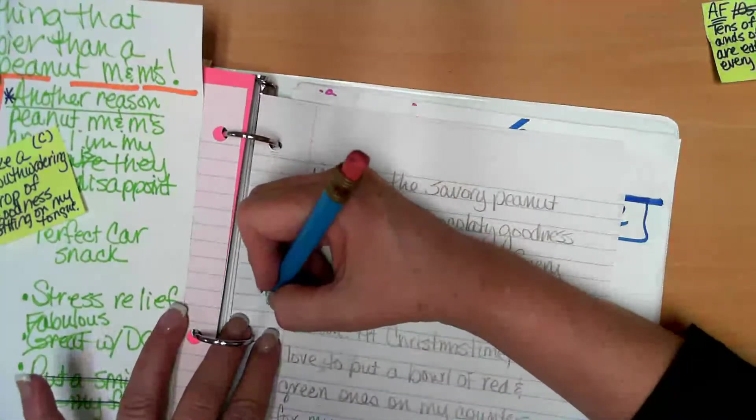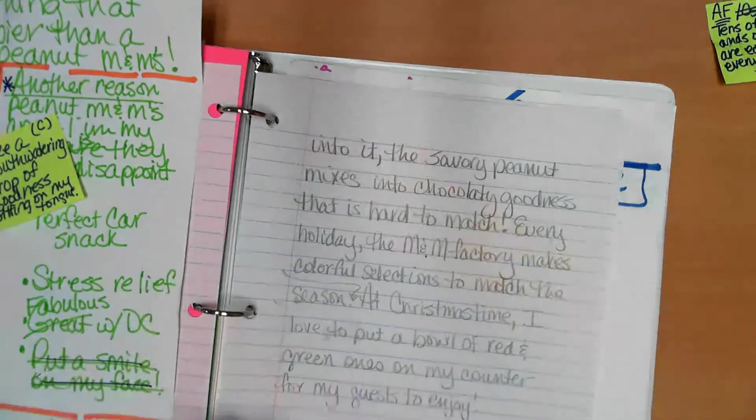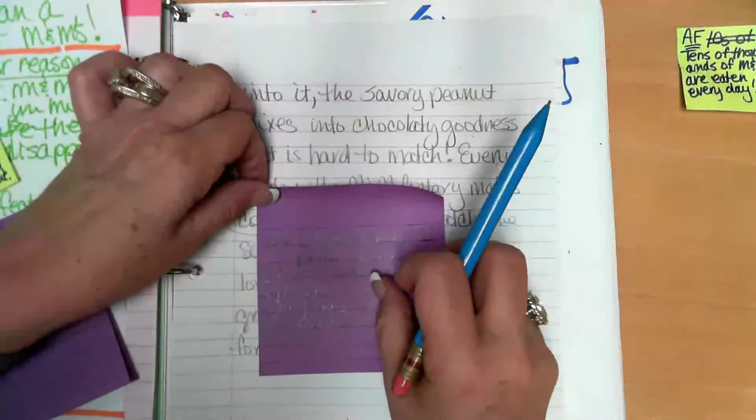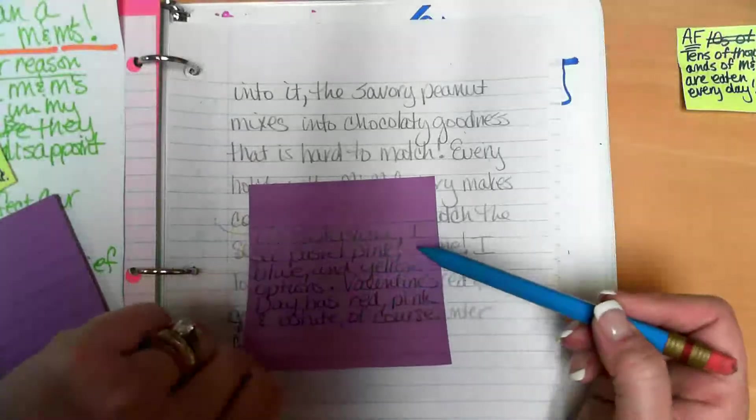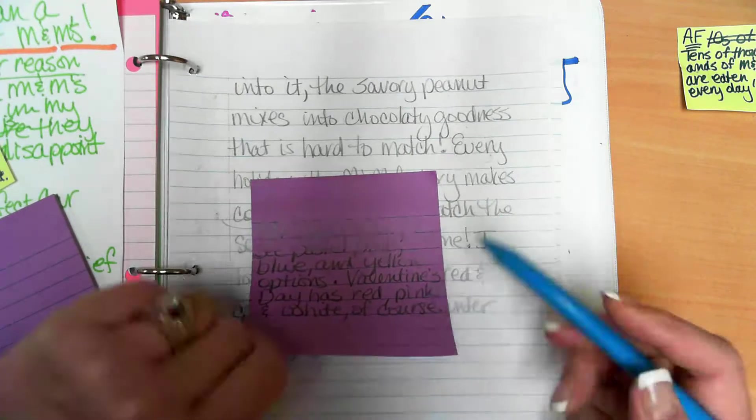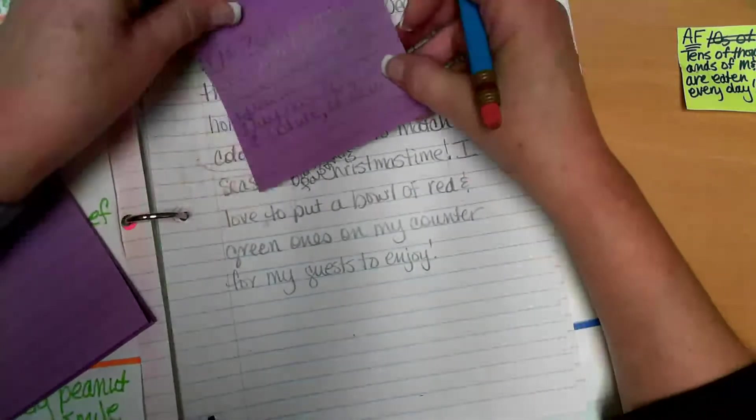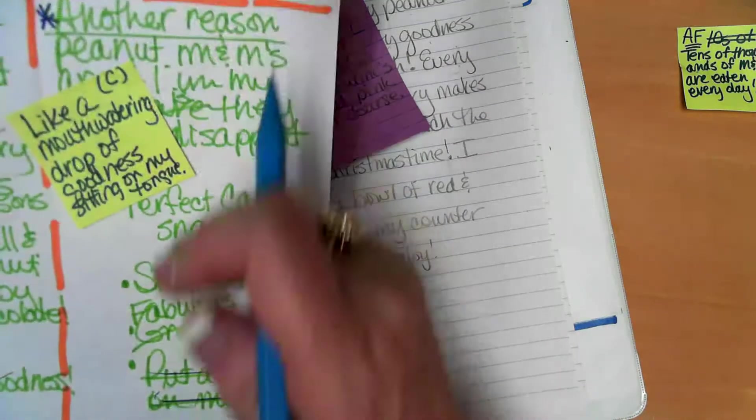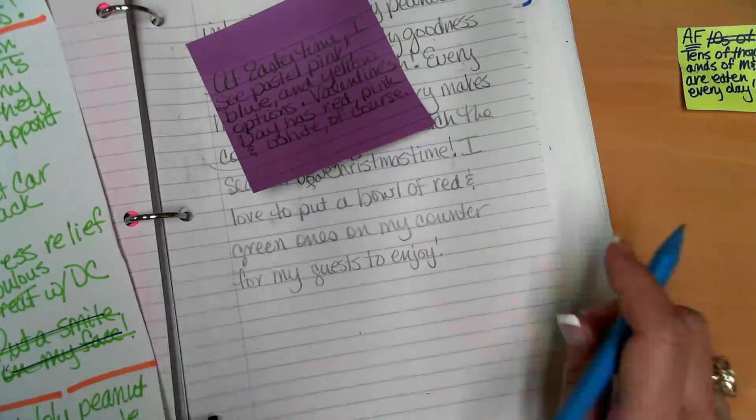I think I might even go in here and insert. I need some information about the different holidays. So I think I might go ahead and write something about Easter and Valentine's Day. So let me pause and write that. Okay, let's look at this. I changed a little bit. I was going to add this in. So I put this, and you may not can see that real well because of the lighting. Let me lift it up. At Easter time, I see pastel pink, blue, and yellow options. Valentine's Day has red, pink, and white, of course. But my favorite is Christmastime. I love to put a bowl of red and green ones on my counter for my guests to enjoy.